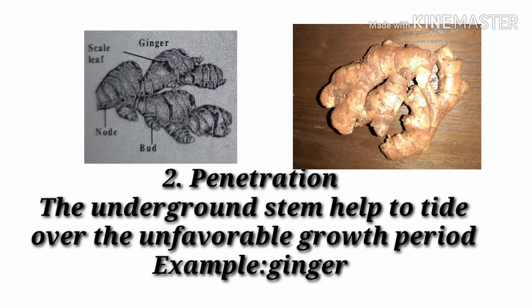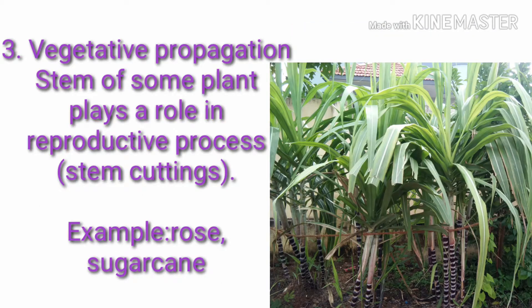The next secondary function is perennation. The underground stem helps the plant to withstand and survive during unfavorable growing periods. An example is ginger, which is also a modified form of stem. Next is vegetative propagation — the stem plays a role in reproduction by undergoing cutting propagation.